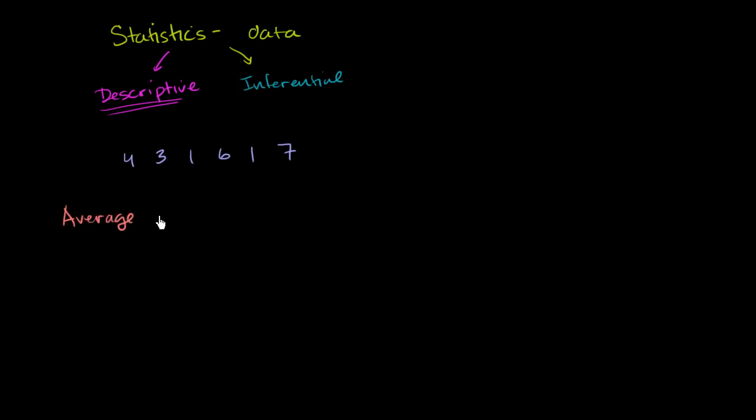Average. And in everyday terminology, average has a very particular meaning. As we'll see, when many people talk about average, they're talking about the arithmetic mean, which we'll see shortly. But in statistics, average means something more general. It really means, give me a typical. Give me a typical. Or give me a middle.